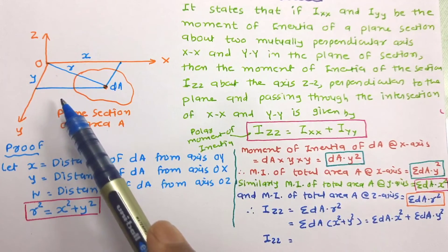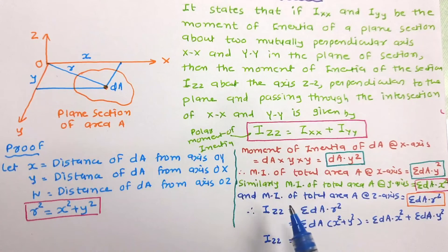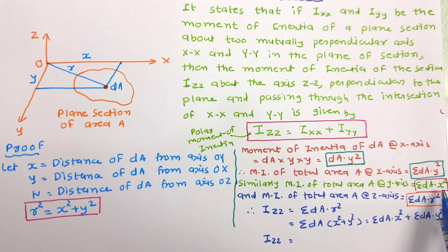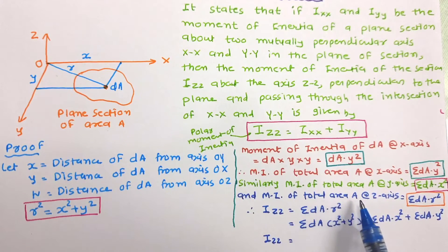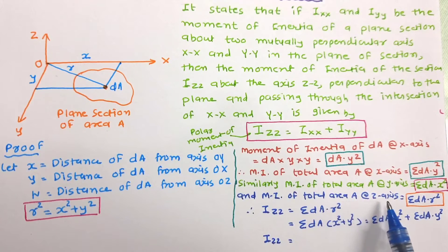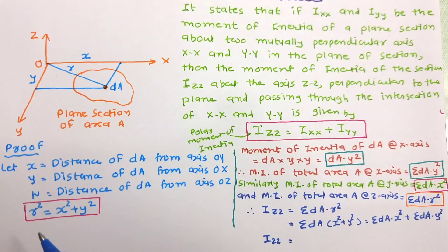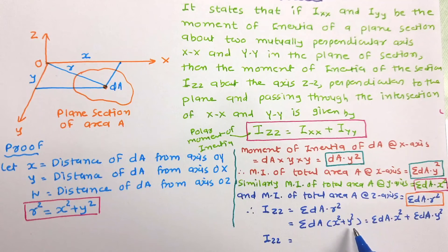Similarly, we can determine the moment of inertia of all such elements about the OY axis: IYY = Σ(DA × X²). In the same way, we can determine the moment of inertia of the total area about the Z axis: IZZ = Σ(DA × R²). But since R² = X² + Y², we substitute X² + Y² in place of R².